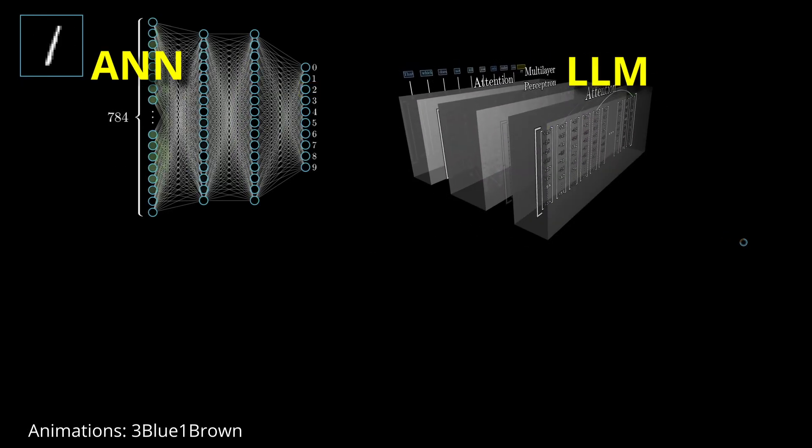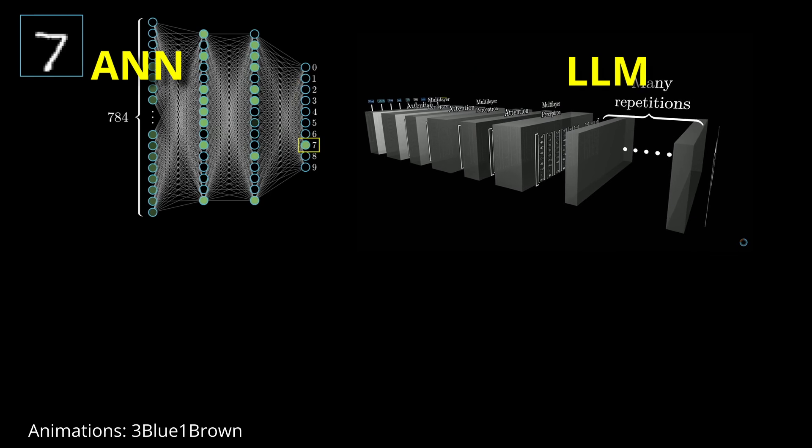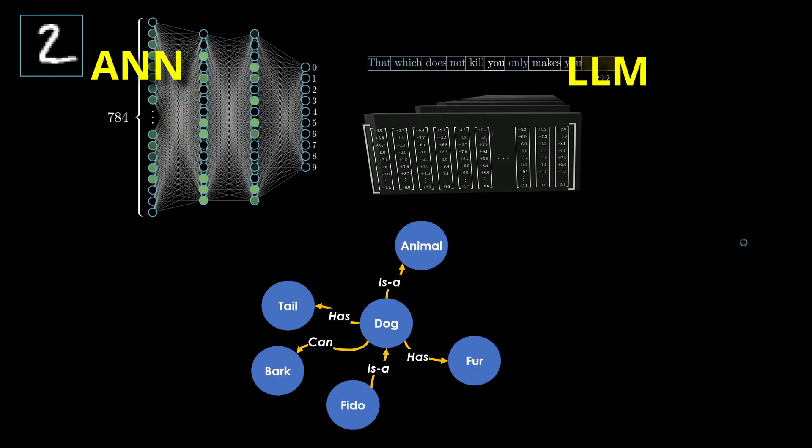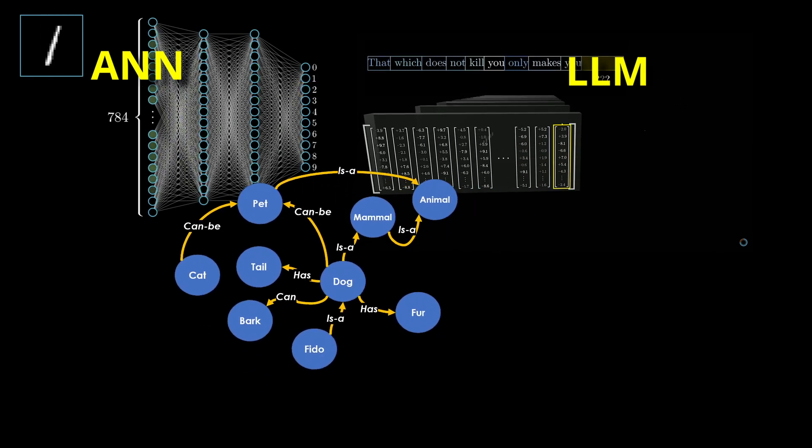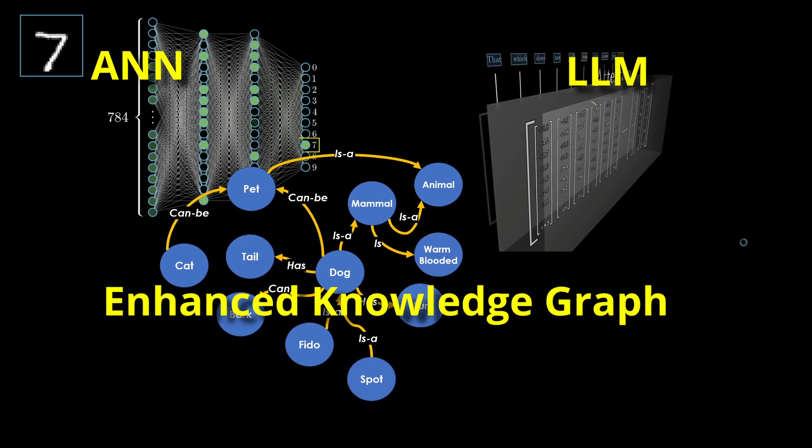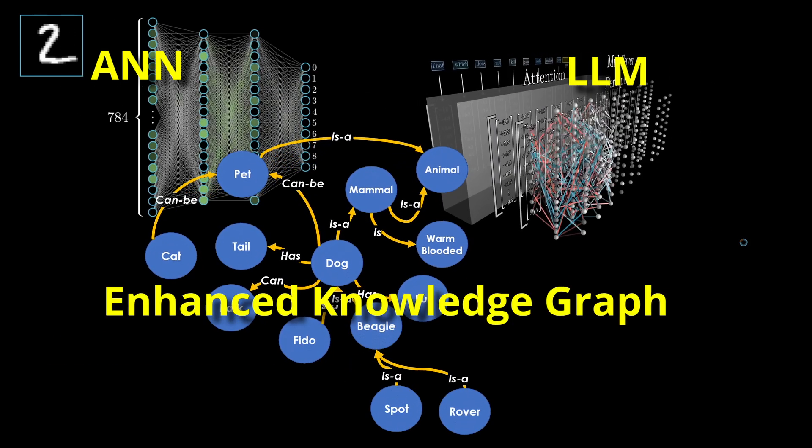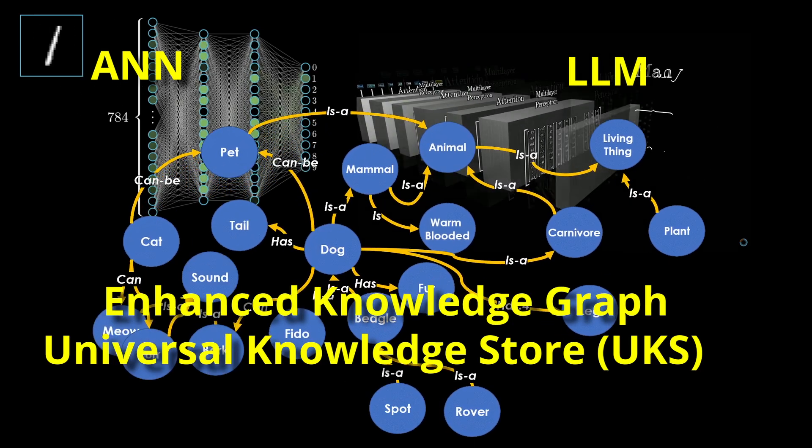There's a different approach to artificial intelligence that holds greater potential than neural networks or large language models like ChatGPT. Today, we're exploring that alternative, what I call the Enhanced Knowledge Graph. Let's dive in.